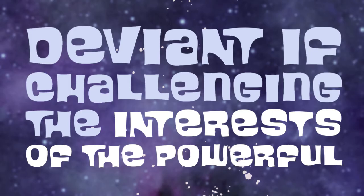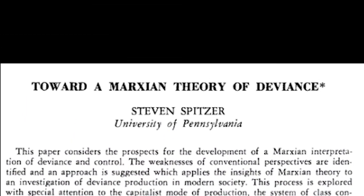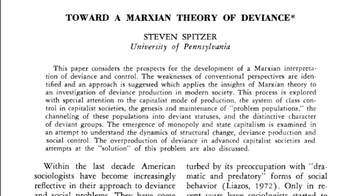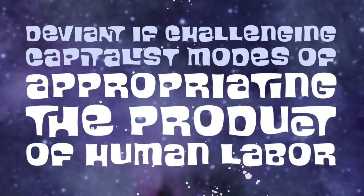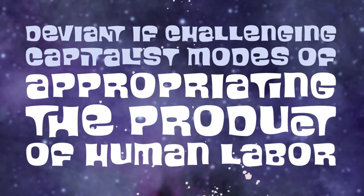In 'Toward a Marxian Theory of Deviance,' Stephen Spitzer focuses specifically on economic class struggles and argues that people or behaviors more likely to be seen as deviant are ones that challenge the capitalist modes of appropriating the product of human labor. So when the poor steal from the rich — whether theft in rich neighborhoods or pilfering from jobs — these are seen as appropriating the product of human labor, going against capitalism by obtaining products without going through official capitalist channels.